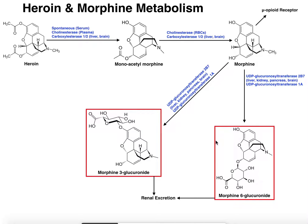Welcome back to Catalyst University. My name is Kevin Tokoff. In this video we're going to discuss heroin and morphine's mechanisms of action and also look at their modes of metabolism, which will actually span multiple tissues — the peripheral tissues and the liver.